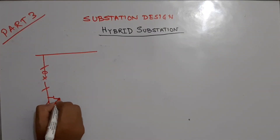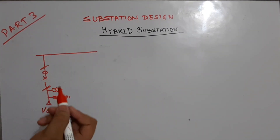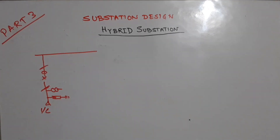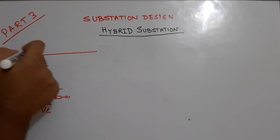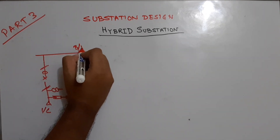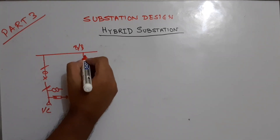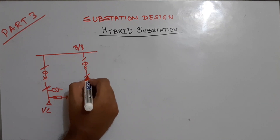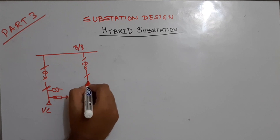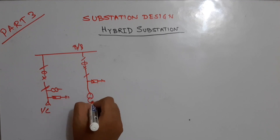For the incoming feeder there is a lightning arrester and a line PT. So the incoming feeder sequence is: lightning arrester, line PT, isolator, circuit breaker, CT, isolator, then connected to the main bus bar. For the outgoing transformer feeder the arrangement is: isolator, circuit breaker, CT, isolator, then a lightning arrester and the transformer.